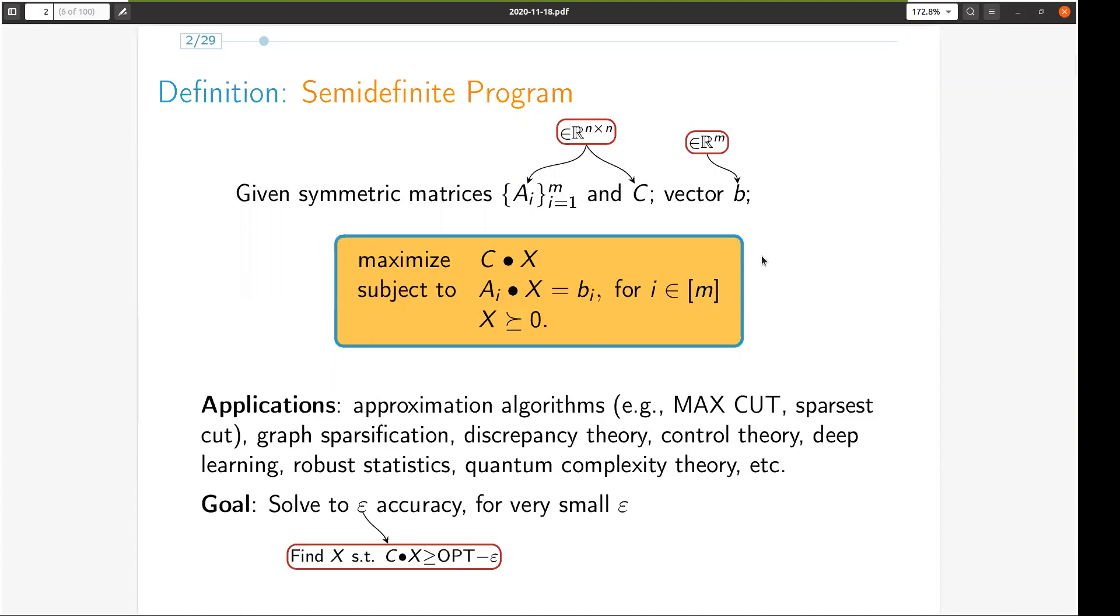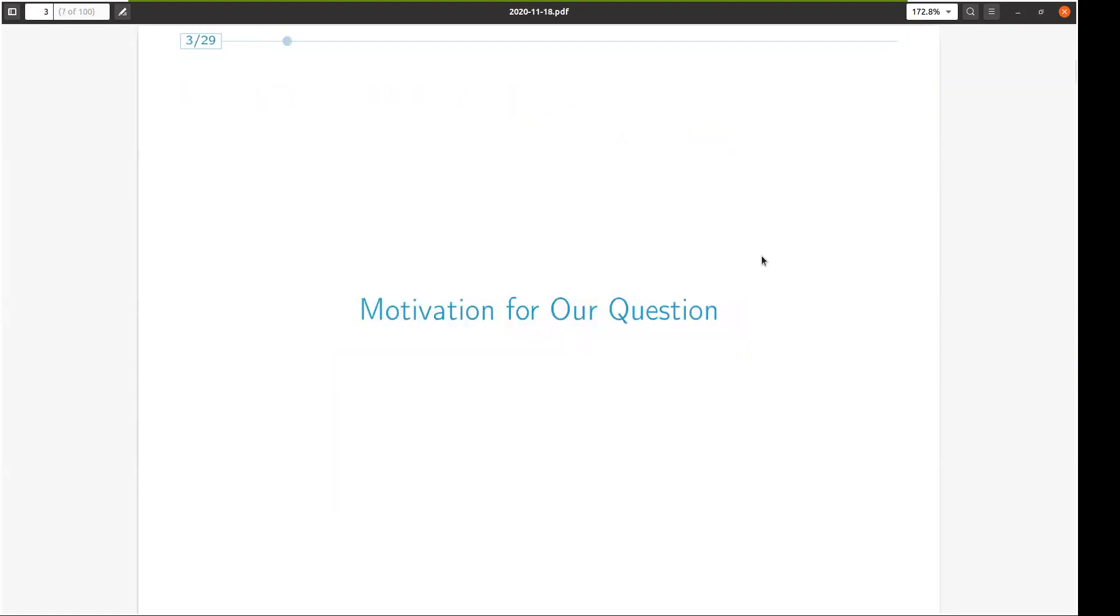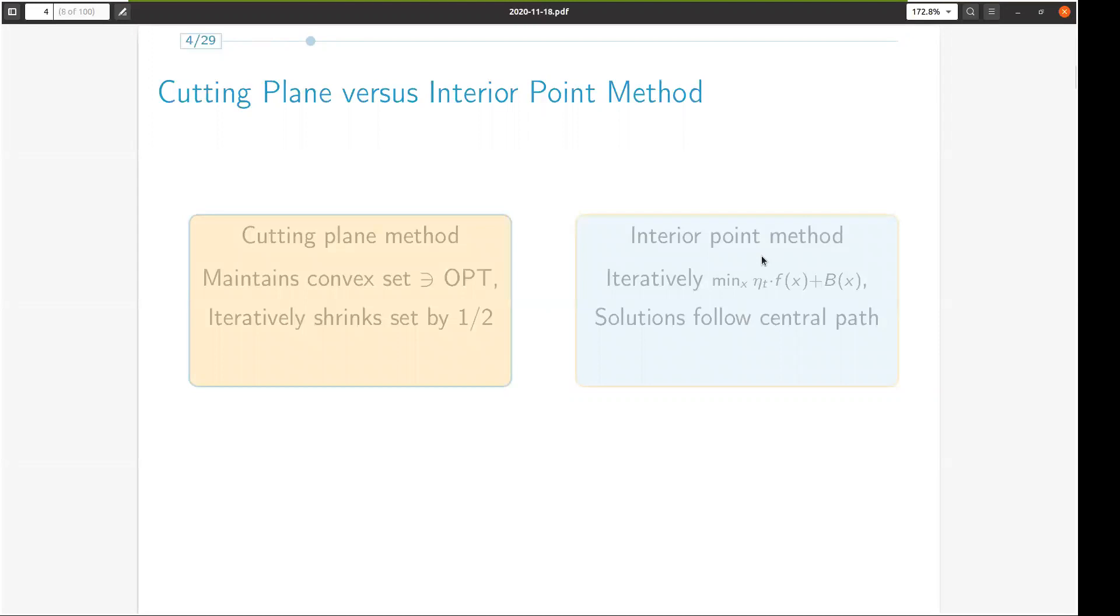Our goal is to solve this problem to epsilon additive accuracy where epsilon is very small. We have two classes of SDP algorithms to achieve the goal of runtime with logarithmic dependence on 1 over epsilon for very small epsilon.